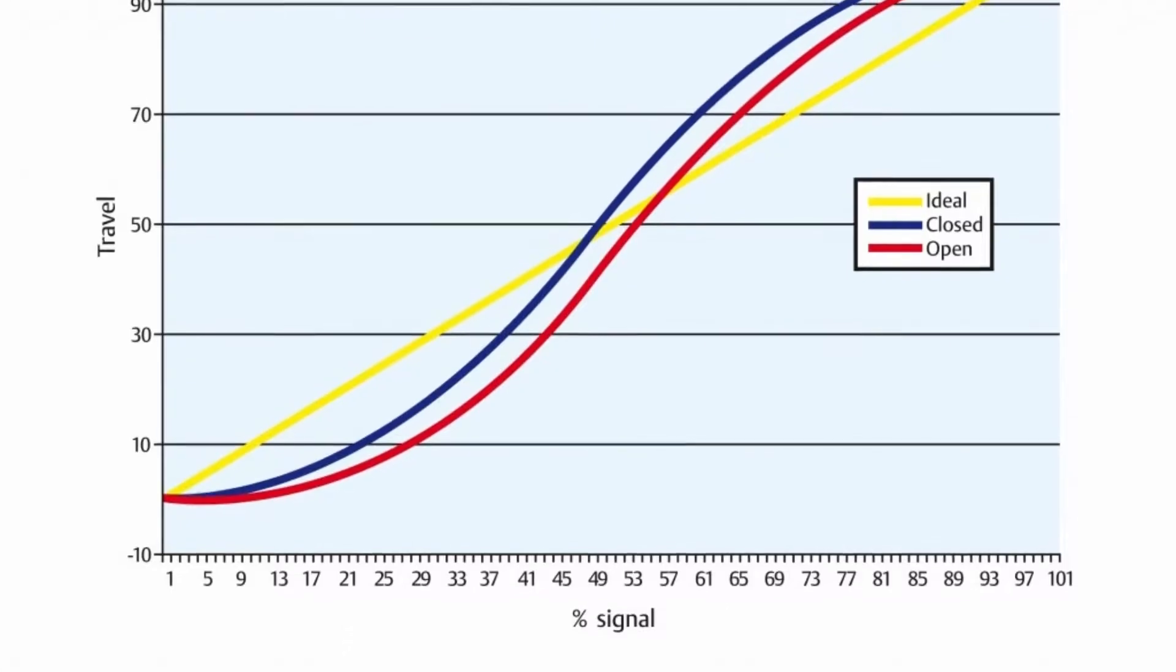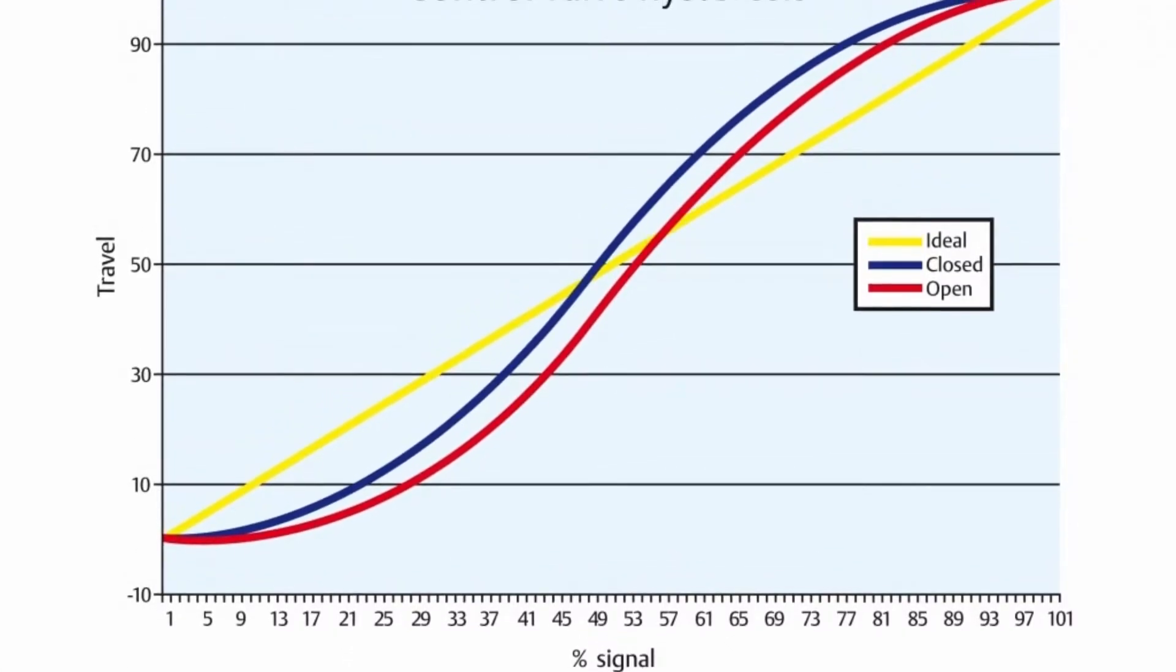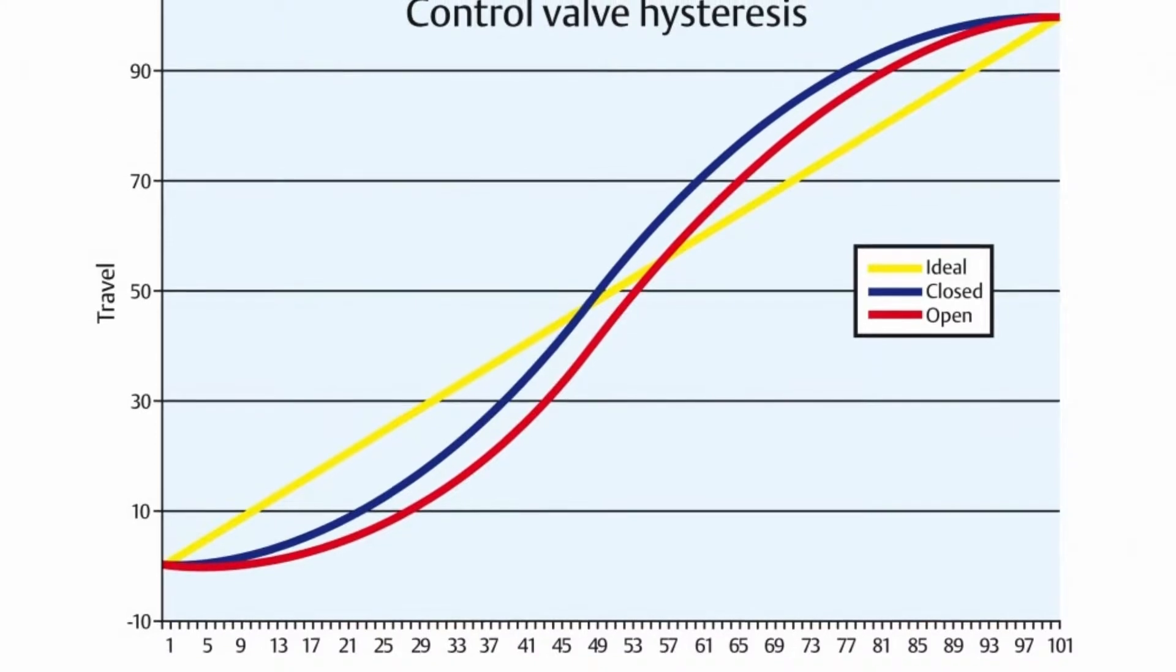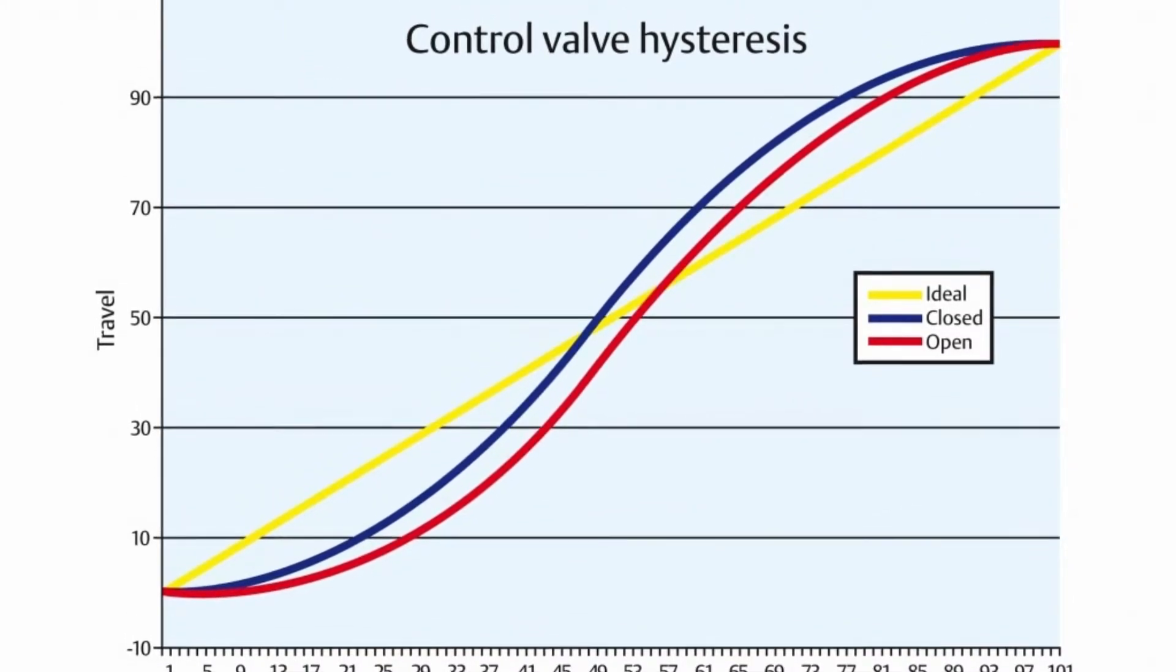This history dependence is the basis of memory in a hard disk drive and remnants that retain a record of the Earth's magnetic field magnitude in the past.